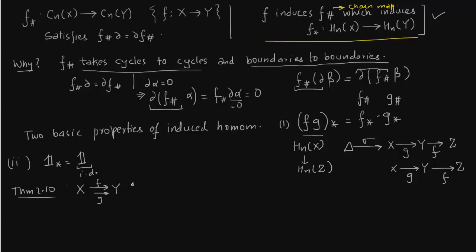Theorem 2.10 is simply this: you have two maps f and g which are homotopic. Now, if these maps are homotopic, they will induce the same homomorphism: f star equals g star from homology groups of X to homology groups of Y for all n. This is true for all n. What is the corollary? These homomorphisms, if they are induced by homotopic equivalences...